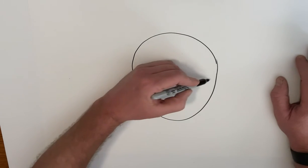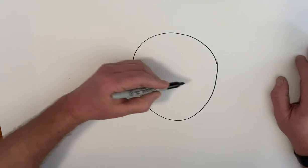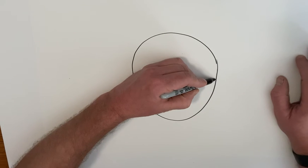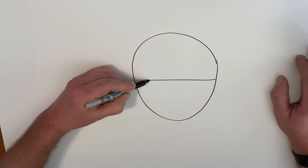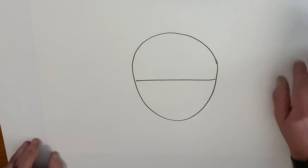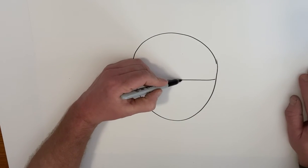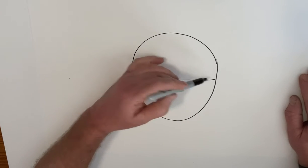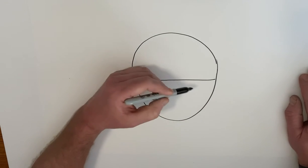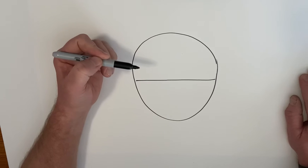The eyes on a person go halfway down the head, from the top of the head to the chin. That's about where the eyes would go, halfway down. There's five eye spaces from one side of the head to the other. There's one eye space in between the eyes.